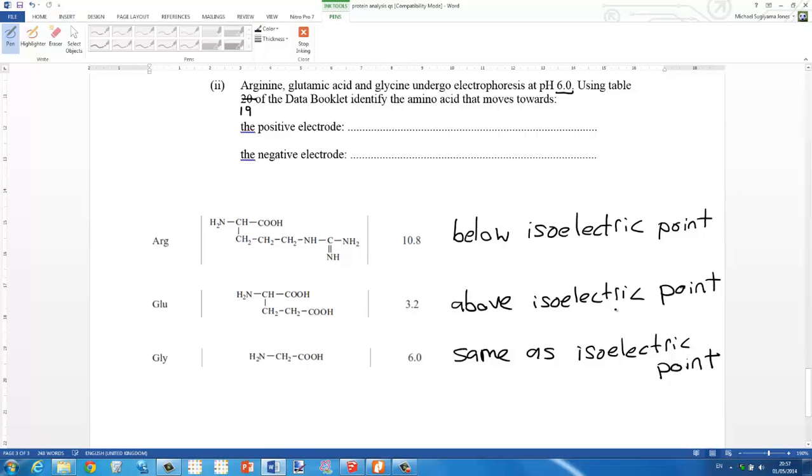So how do we determine the charge? We look at glycine first. At the isoelectric point, which is the same as the pH of the buffer solution 6.0, we're going to have the zwitterion. We're going to have H3N+ on this side and then COO- on this side.